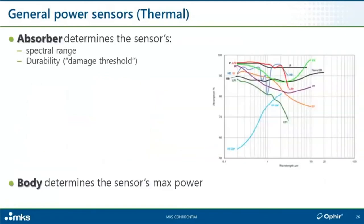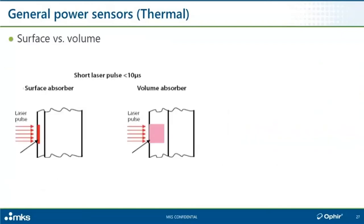The absorber used in a given sensor determines the spectral range of the sensor. As mentioned, different materials absorb different wavelengths differently, and also the durability — a given sensor material can handle a given maximum power density or energy density. We have spectral relative sensitivity curves for different sensors and absorber types on our website, in the catalog, and in the data sheets. The body of the sensor determines the maximum power for which it can be rated, because different sensor bodies dissipate heat faster or slower.